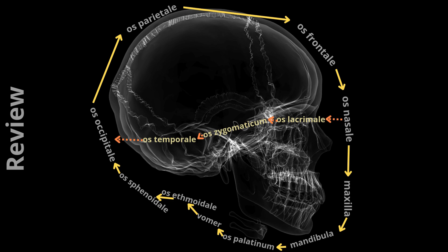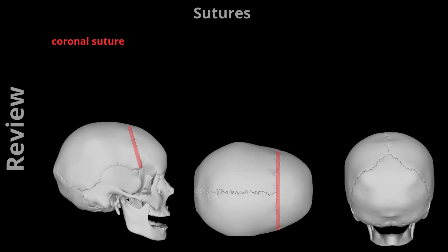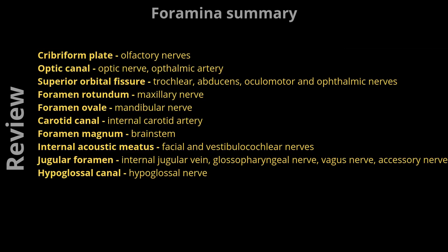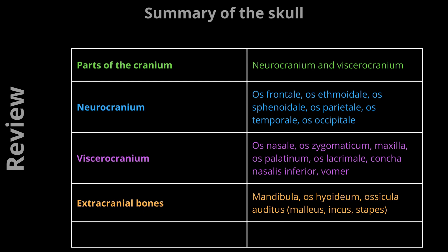Next we will talk about the sutures — we mentioned the coronal suture, the sagittal suture, and the lambdoid suture. Then we talked about the cranial foramina and the main structures located in the three cranial fossae. Most of these are nerves and blood vessels. Here is a brief summary of the various openings and the structures that run through them, as well as a short summary of the skull. And that's it for today. I hope you enjoyed learning about the skull. To make sure you don't miss the next videos, don't forget to subscribe, and please give us a like. Have a nice day with your skull.